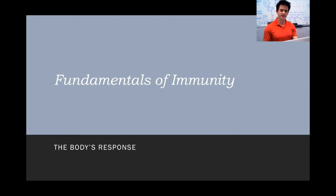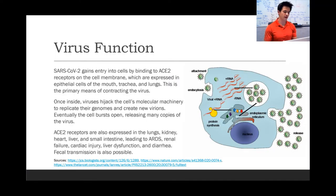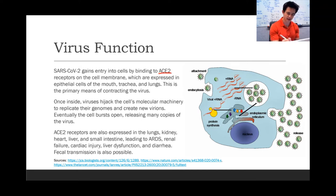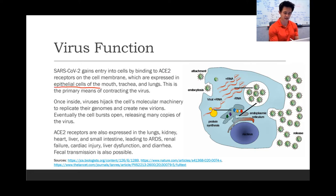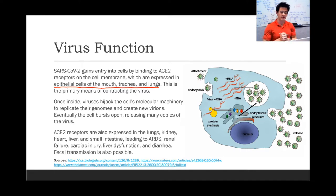Let's talk about disease and immunity. The virus gains entry into cells by binding to ACE2 receptors, which are expressed on the cell membranes of epithelial cells of the mouth, trachea, and lungs. This is the primary means of contracting the virus — having virions make contact with the cells of the respiratory tract.